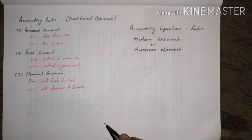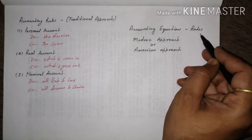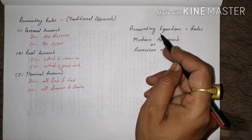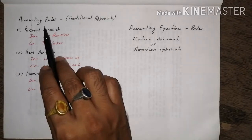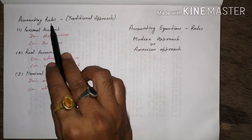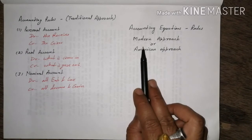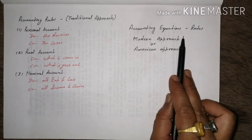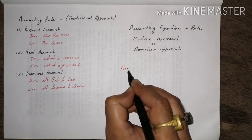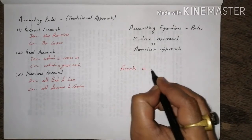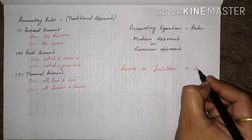Today we have learned about the accounting equation rule, which is applied for passing advanced journal entries. We now have two rules: the traditional approach (personal, real, and nominal), and the modern rule or American approach, which depends on the accounting equation: Assets = Liabilities + Capital.